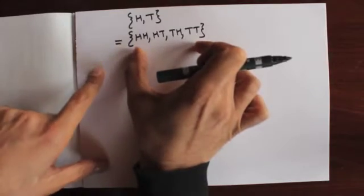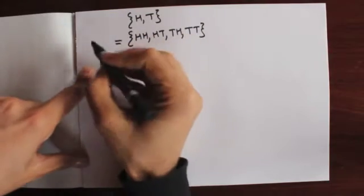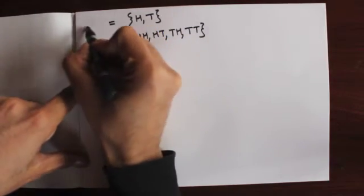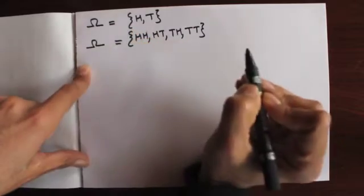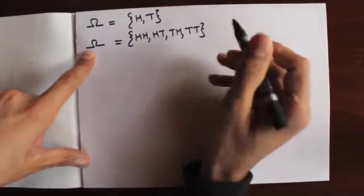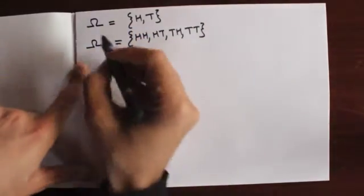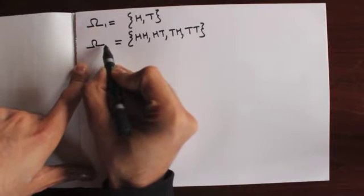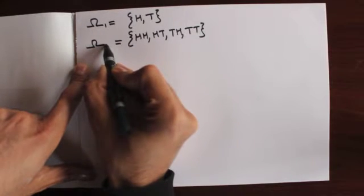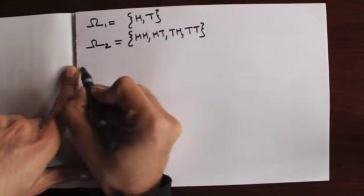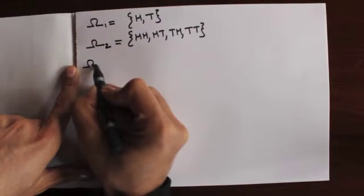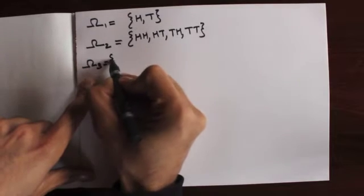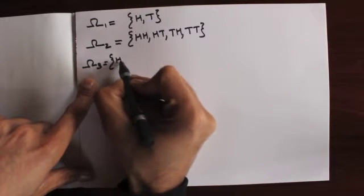A set of all possible outcomes of a random experiment is called a sample space, denoted by capital Omega. This is the sample space for tossing the coin once, and this is the sample space for tossing the coin twice. We can likewise define another sample space by tossing the coin three times.